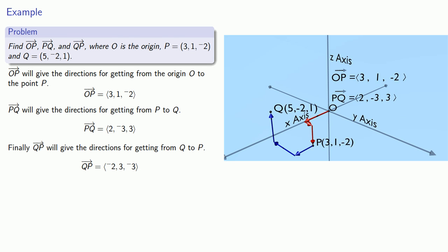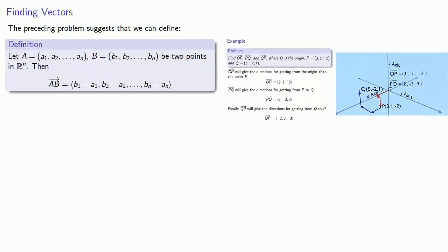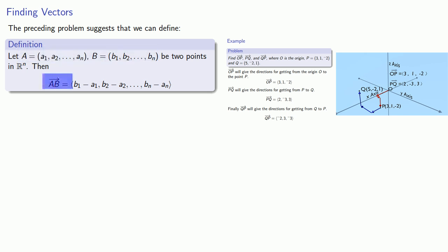Our work on this problem suggests the following definition. If I have two points A and B in Rn, then the components of the vector AB will be the difference between the coordinates of B and the coordinates of A — that is, (b₁ − a₁, b₂ − a₂, and so on).